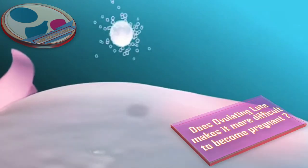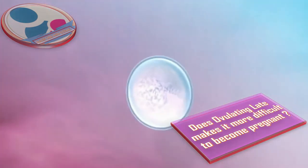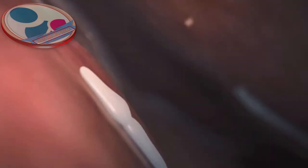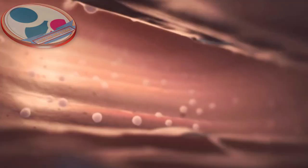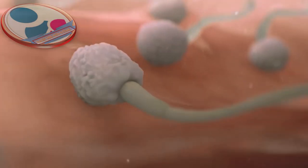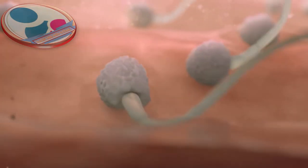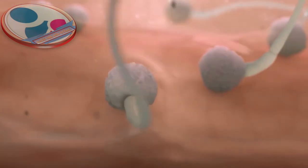Does ovulating late make it more difficult to become pregnant? As long as the patient is attempting pregnancy when she ovulates, people who ovulate late can become pregnant at the same rate as those who ovulate on time or early. However, over the course of a year, people with late ovulation will have fewer opportunities to become pregnant.